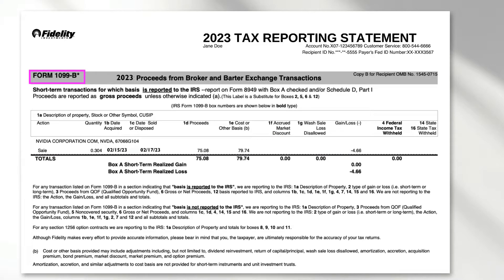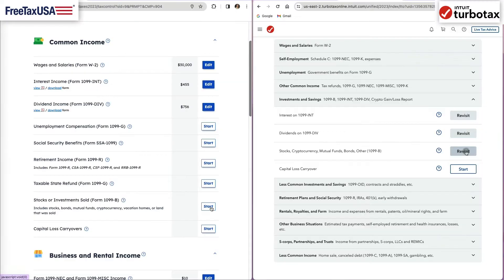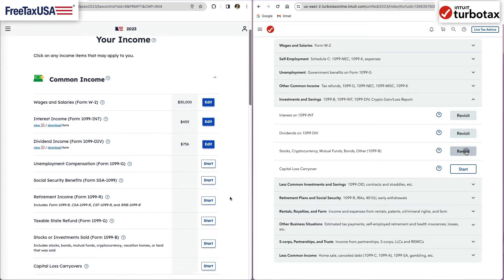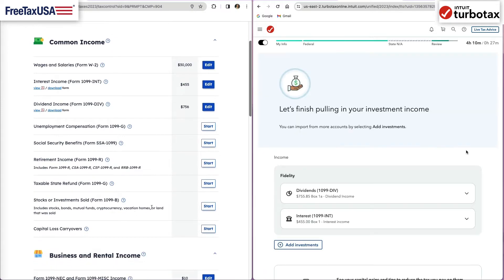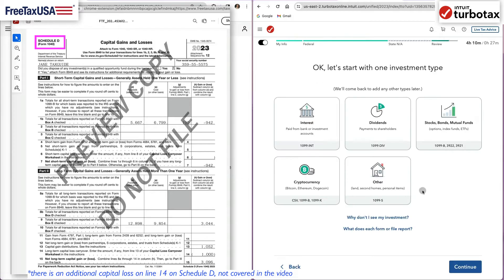Form 1099B has detailed dates of sales and acquisitions, if available, selling price and original purchase price, or otherwise called cost basis amount. When you enter Form 1099B into tax software, it creates Schedule D, where all the gains and losses are recorded.